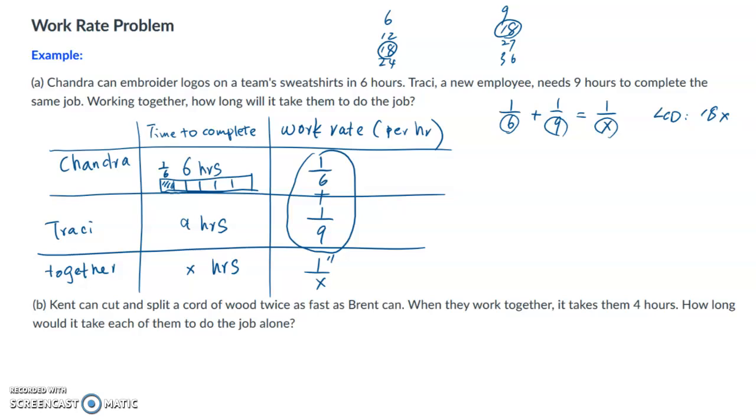Now we have to turn each denominator into the common denominator. I'm going to multiply the six by 3X, so that will become 18X. Do the same on top. Multiply the nine by 2X to make it 18X, and multiply the X by 18 to make it 18X. Now this problem becomes 3X over 18X plus 2X over 18X equals 18 over 18X. Since they have the common denominator, we can just make the top equal. So 3X plus 2X should be equal to 18.